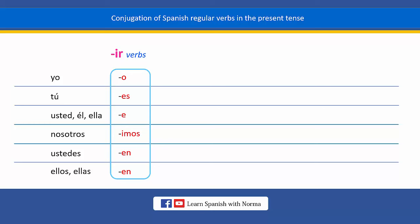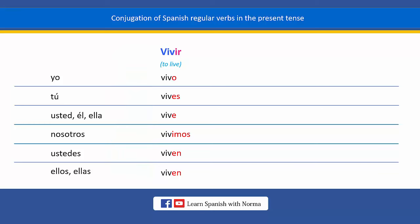Now, let's conjugate one verb that belongs to this group. The verb "to live" in Spanish is vivir. This is the infinitive form of the verb "to live" in Spanish. For conjugating this Spanish verb, vivir, just remove the last two letters — the IR ending. And then, add the corresponding endings that match each subject pronoun. So, this is the conjugation of the Spanish verb vivir in the present tense.